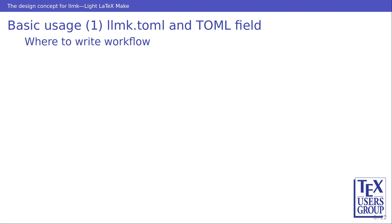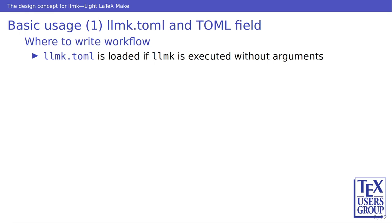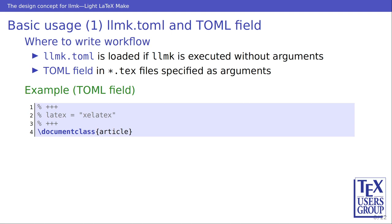Let me explain briefly about the basic usage of LLMK. First, where to write its configuration? When LLMK is executed without any arguments on the command line, llmk.toml is loaded automatically. Another option is to use TOML fields in TeX files. TOML fields, as shown in this example, are special commands in a TeX file. The place sandwiched by a comment line which includes more than three plus marks is a TOML field, and you can write the configuration of LLMK in TOML format. We use TOML as the format for writing configuration for LLMK.